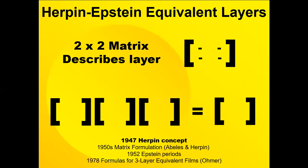In 1947, Herpin in Paris published an article using matrix description of a thin film where a two by two matrix can express the index of refraction and thickness of a thin film at a given wavelength and angle.